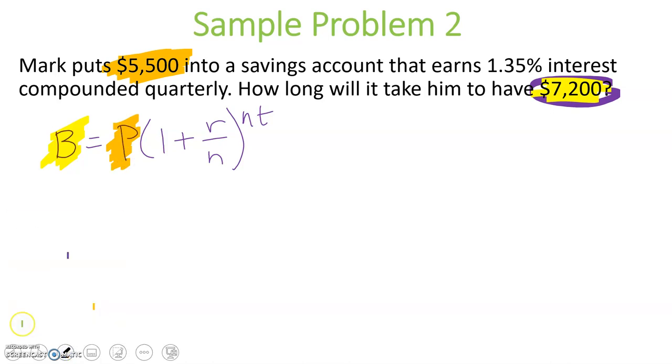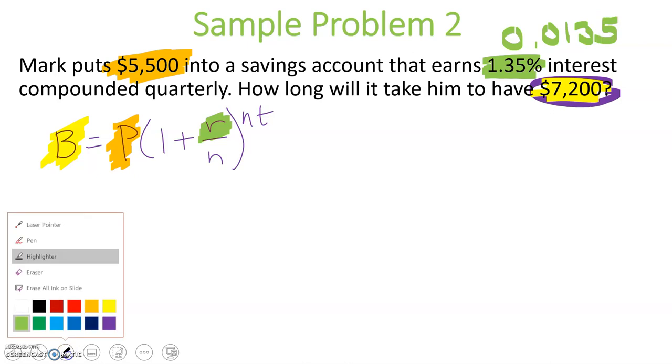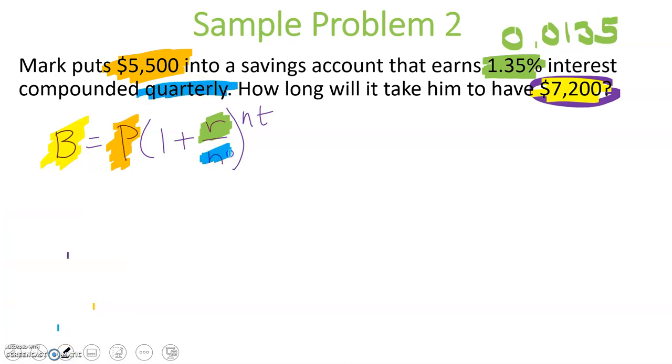We also know that his account is earning an interest rate r of 1.35. Remember, when we do this, we always put it as a decimal. So 0.0135. And we know that this account is compounding quarterly. So we know that n will be 4 because there are four quarters in a year.